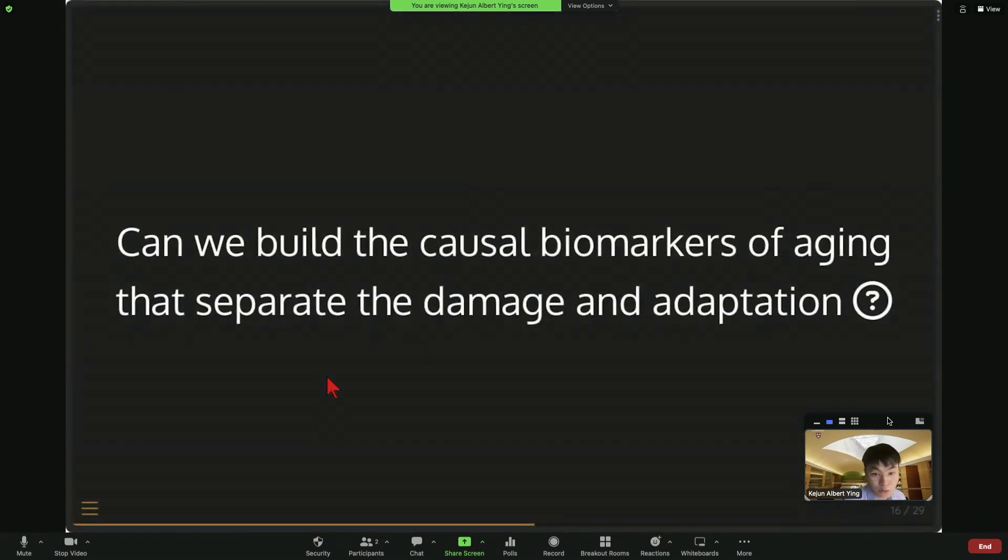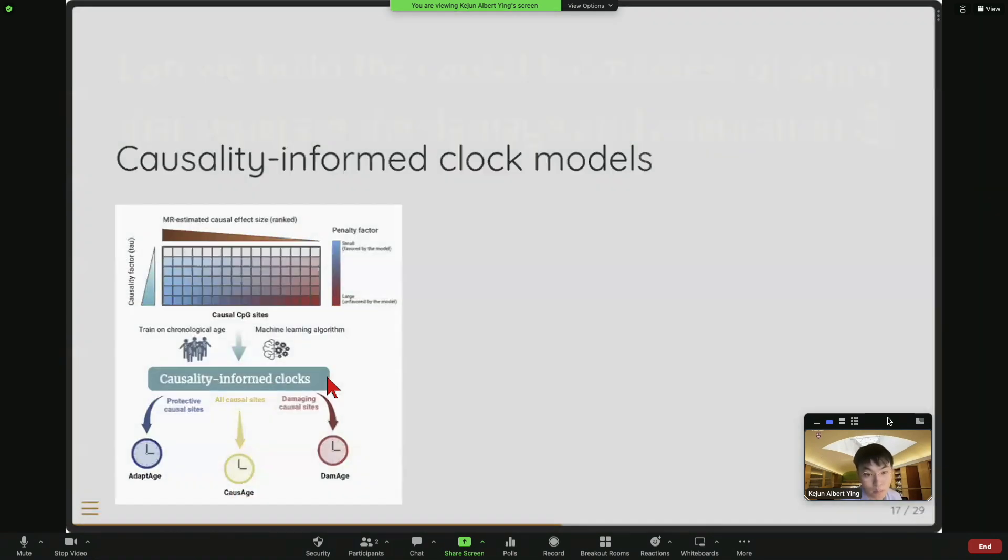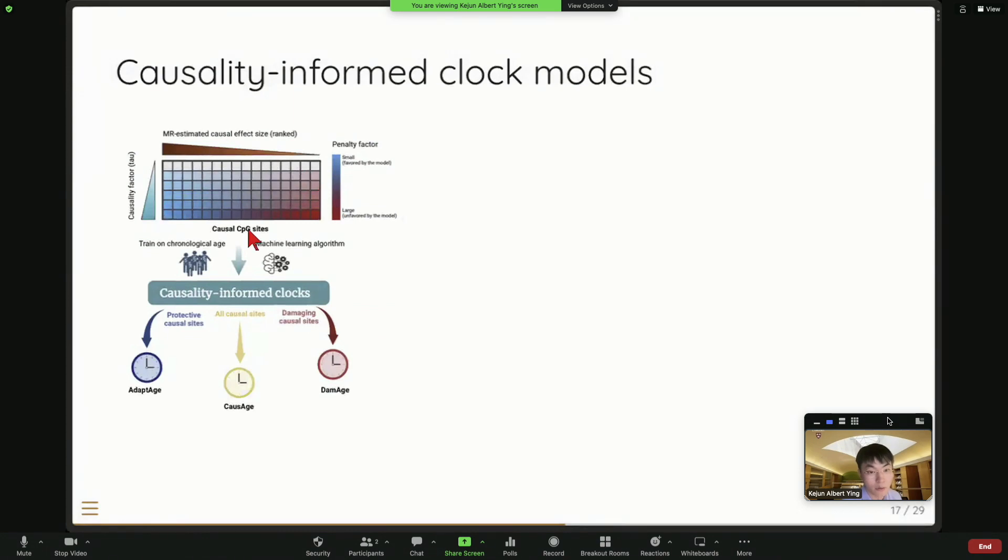And with this information, we can now really build this causality-informed biomarker of aging. So basically, I will not go through the detail of the model, but basically we take the information from the Mendelian randomization, the causal information, and we merge this information to build a clock. So we build three different types of clock. One is CauseAge, which is built on all causal CpG sites and DamageAge using only CpG we detected as damage and AdaptAge using only the adaptation-related CpG sites.